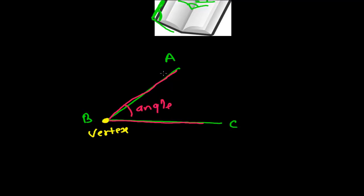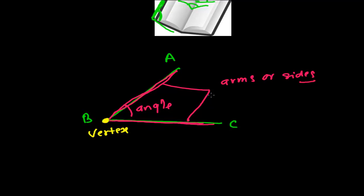The lines BC and BA, whose intersection makes this angle, are called the arms of the angle. Some books also call them the sides of the angle. So these are the arms and the intersecting point is the vertex.